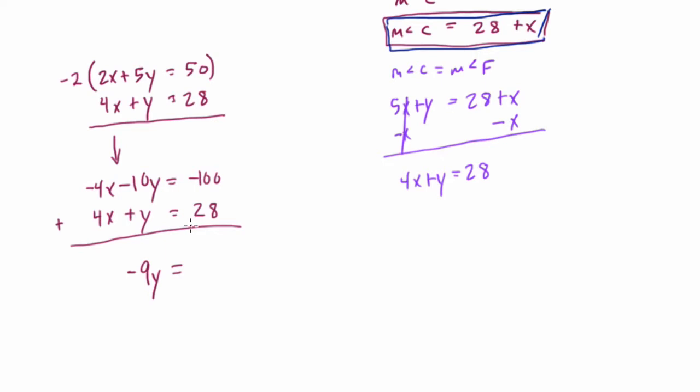Negative 100 plus 28. Well, what's that? I just think of 100 minus 28. That would be 72. So it's negative 72. So divide both sides by negative 9. And y equals positive 8.